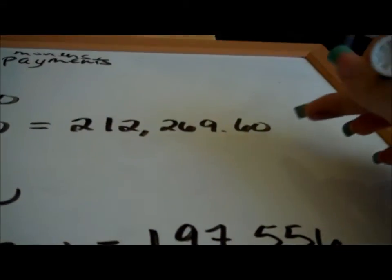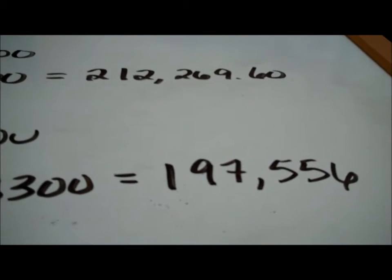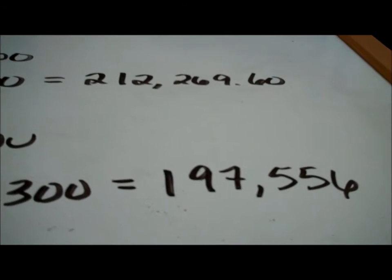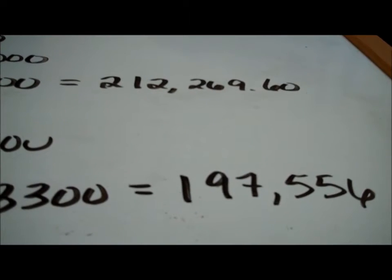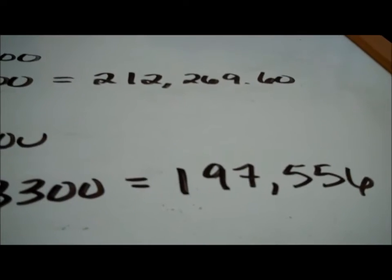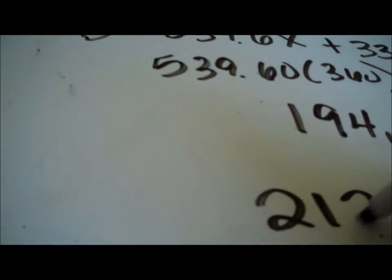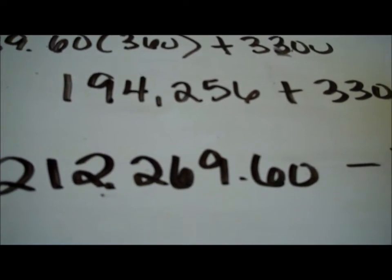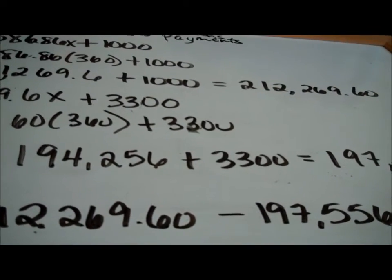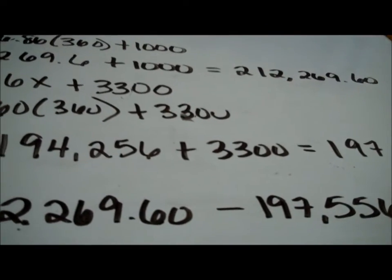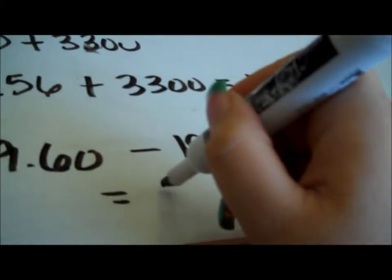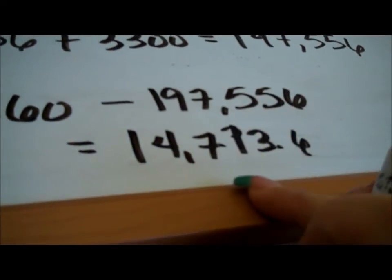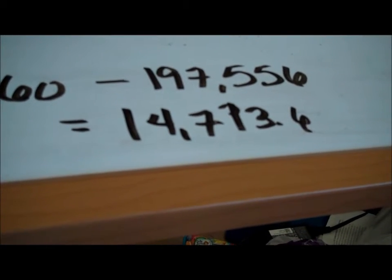Looking at both totals — Bank A is $212,269.60 and Bank B is $197,556. Bank B, even with that $3,300 in extra fees, comes out lower because that half-percent interest difference made a big difference. If you chose Bank B over the 30-year period, you would be saving over $14,000, which is a lot of money.